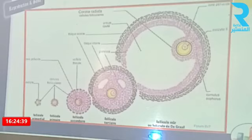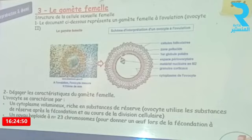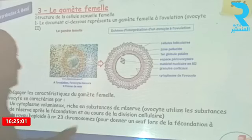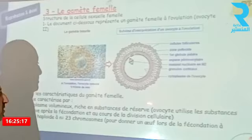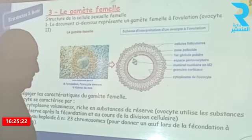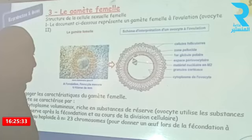Vers le 14e jour, l'ovocyte 1 va être expulsé à partir du follicule mûr et va se transformer en ovocyte 2, bloqué en métaphase 2, ce qui représente le gamète femelle. Voici l'observation microscopique et une représentation schématique d'un ovocyte 2 à l'ovulation. De l'extérieur vers l'intérieur, on note la présence des cellules folliculaires, une zone pellucide, un globule polaire, un espace péri-ovocytaire, des granules corticaux, et un cytoplasme avec un matériel nucléaire arrêté en métaphase de la deuxième division méiotique.